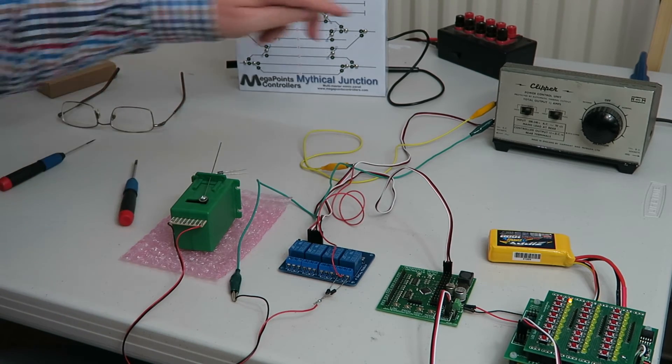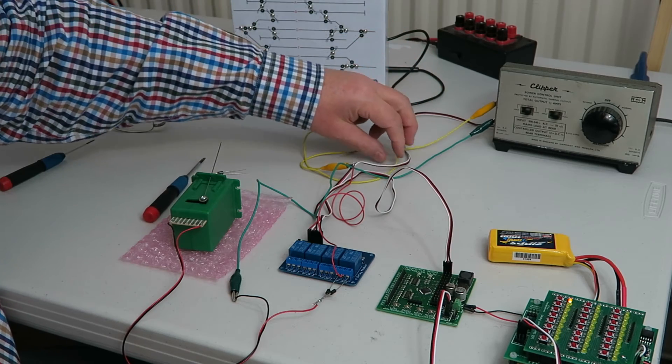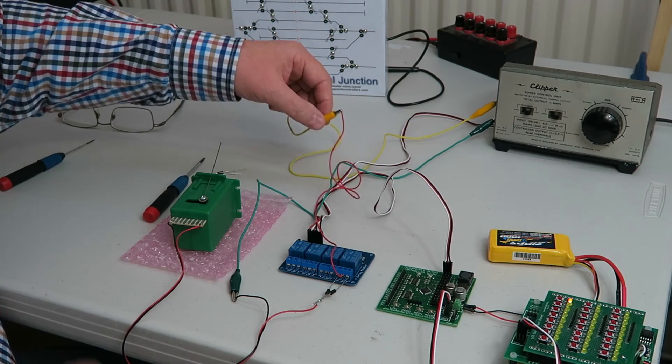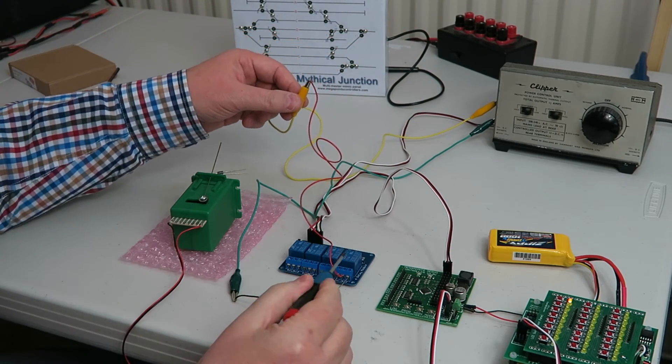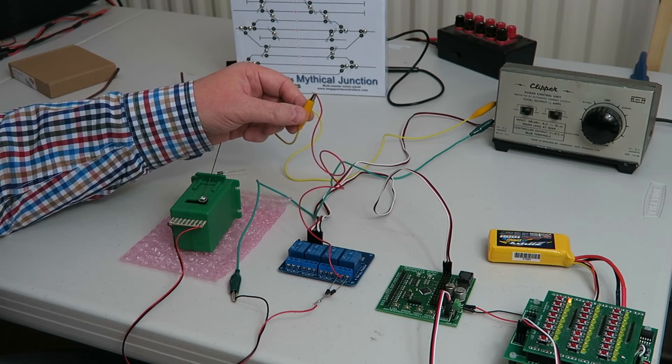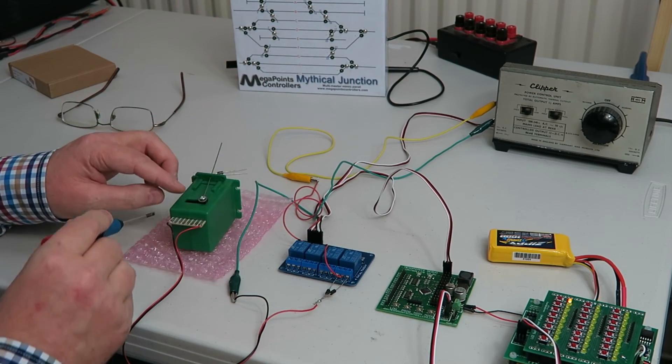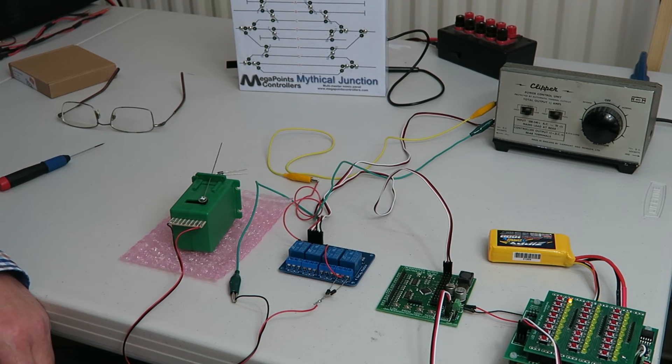So let's recap on the wiring. From the AC power source this particular line is going through to the common of the relay in the center, and the other power line is going to either terminal 1 or terminal 8 on the switch machine. It doesn't matter which way round it is.